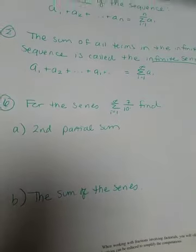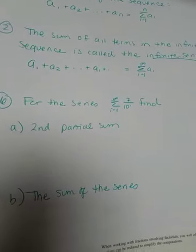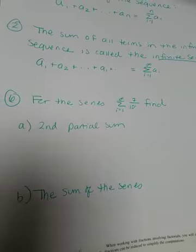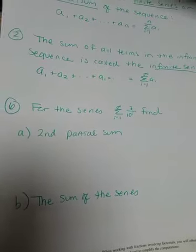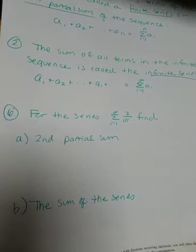So for the series, your lower limit's 1, your upper is infinity of 7 over 10 to the i. So if I asked you to find the second partial sum, this is an example of the first situation, it's finite. We're only doing the second partial sum, so that's only the first and second terms.